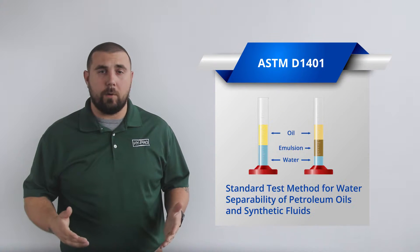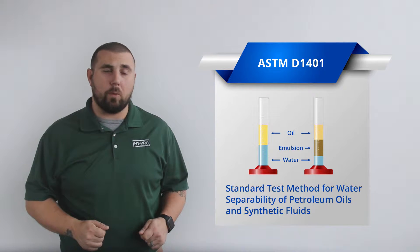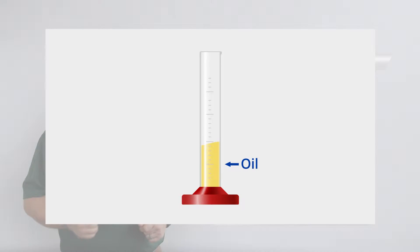The industry standard test for demulsibility level of turbine oil is ASTM D1401. To start the test, 40 milliliters of sample turbine oil and 40 milliliters of distilled water are mixed together for 5 minutes.